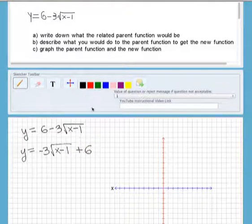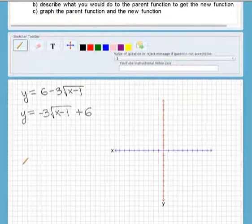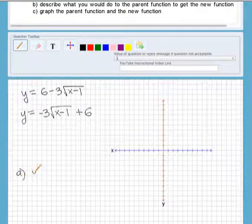Okay, so now it says part A is write down what the related parent function would be. So in this case, the related parent function would be y equals the square root of x.